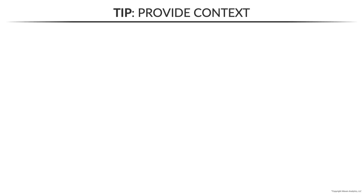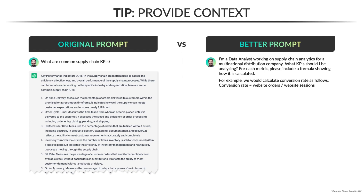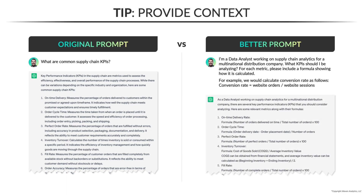For this next example, imagine that you just got hired as a data analyst in a supply chain role, and you're looking to get up to speed with industry metrics and KPIs. You could try a pretty generic prompt like 'what are common supply chain KPIs,' which might be fine if you're just looking for a high-level summary. Or you could add more context to get a more tailored response: 'I'm a data analyst working on supply chain analytics for a multinational distribution company. What KPIs should I be analyzing? For each metric, please include a formula showing how it's calculated.' We'd calculate conversion rate, for example, as website orders divided by website sessions. This gives us similar information back, but with an additional level of detail written in the language of a data analyst.